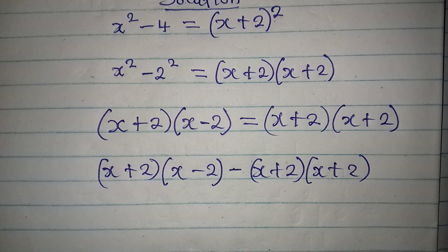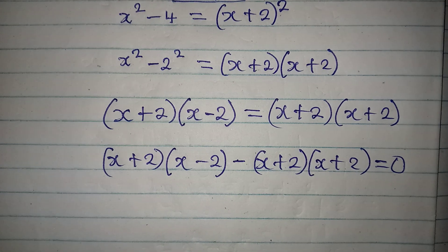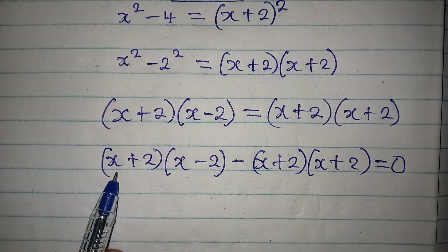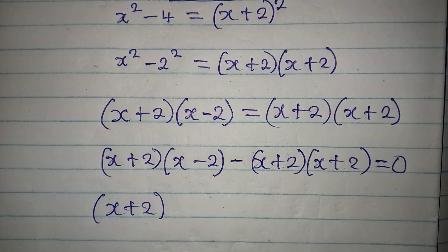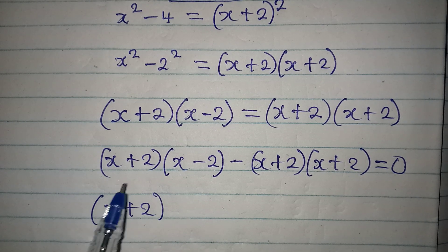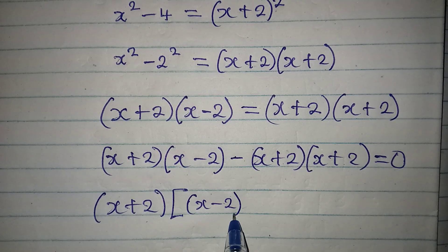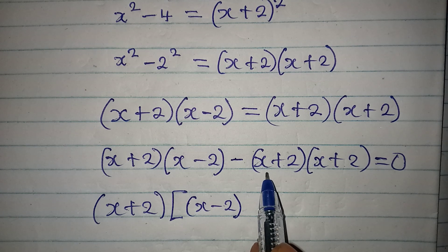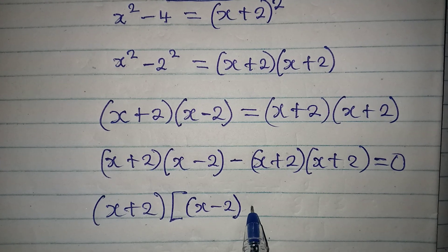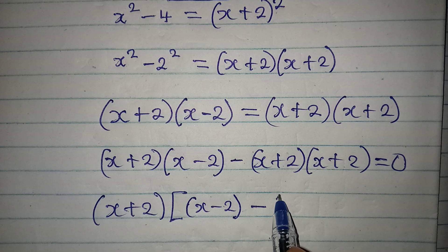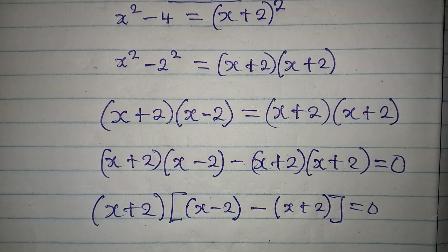Both of these terms are positive, so you cannot cancel them directly. The whole of this will be equal to zero. We factorize because we have x plus 2 and x plus 2, so x plus 2 will come out as a common factor. Then here we have x minus 2, and since we brought out one x plus 2, one will still remain, so we have minus open bracket x plus 2. This is still equal to zero.